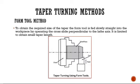In the form tool method of taper turning, the form tool is fed slowly straight into the workpiece by operating the cross slide perpendicular to the lathe axis. The tool itself has the angle equivalent to the taper angle to be produced on the workpiece — the same taper angle is imparted onto the workpiece. This method is used only for short-length tapers.